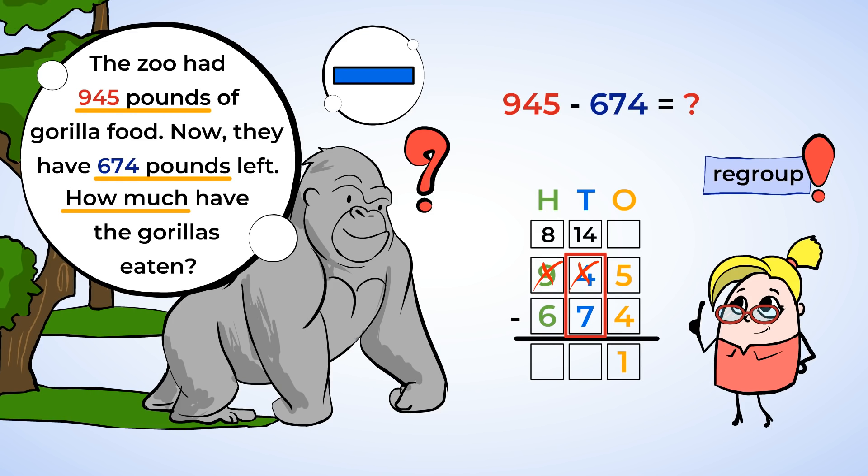We would never write 14 in the tens place, we're just borrowing some tens from the hundreds place to help us solve our problem. Now we have enough to subtract 7. And 14 minus 7 is 7. So write a 7 in the tens place.